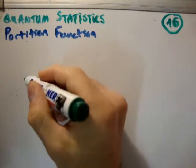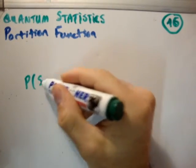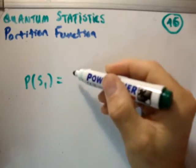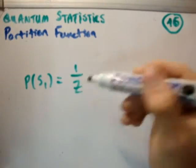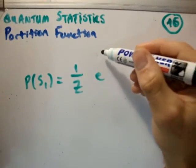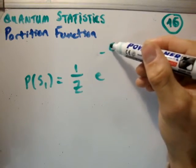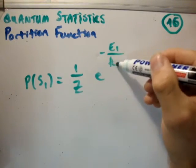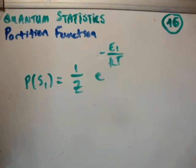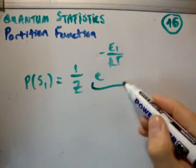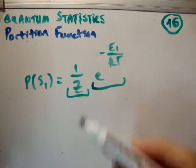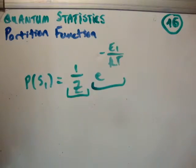Let's just have a quick reminder. We know that the probability of event S1 is equal to 1 over z times the Boltzmann factor, which is e to the minus e1 over kt. That's what the probability is. This is called the Boltzmann factor, and z is called the partition function.